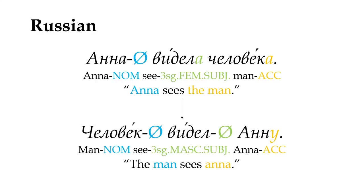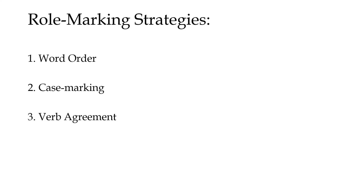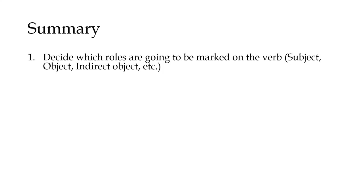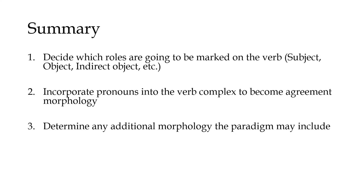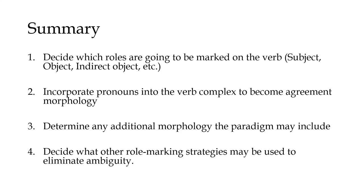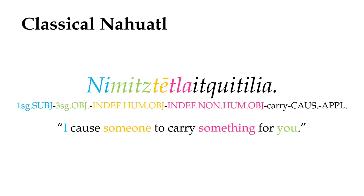For your own conlang, feel free to use a mix of these strategies to employ as much or as little role marking as makes sense, so long as it's at least reasonably clear who's doing what to whom. In summary, if you want to create a conlang that uses verb agreement: decide which roles are going to be marked on the verb — whether it's the subject, object, indirect object, and/or other roles; incorporate pronouns into the verb complex to become agreement morphology; determine any additional morphology the paradigm might include, such as pluractionality, portmanteau agreement, or inverse marking; and decide what other role marking strategies may be used to eliminate ambiguity. Overall, verb agreement presents the possibility for a wide variety of unique and interesting grammatical features, and can serve as a very useful tool for any conlanger's repertoire.